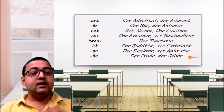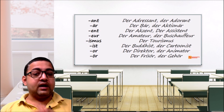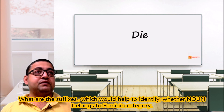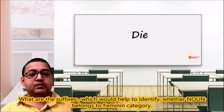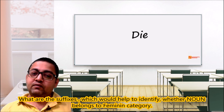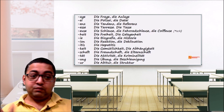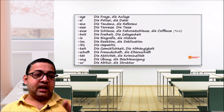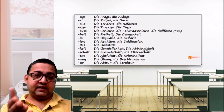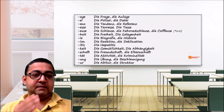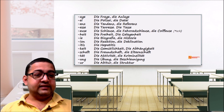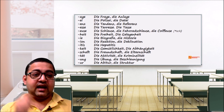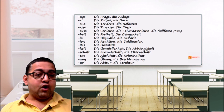Now, what are the suffixes for nouns that belong to the feminine category? There is quite a big list. Feminine suffixes include: -age, -ei, -anz, -enz, and others.